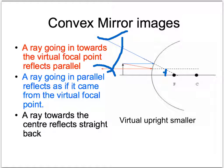Now we know everything we need to know about finding images in mirrors. All you do is draw three simple rays and look at where they meet. The only thing that changes the properties of the image is where you put the object.